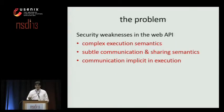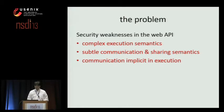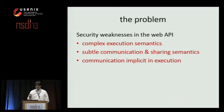I assert that these vulnerabilities aren't merely problems with the way web browsers implement the API, but rather problems with the API itself. The web API has very complex execution semantics and subtle communications and sharing semantics, and this communication often occurs implicitly. Because these are problems with the API, they can't be fixed simply by re-architecting the browser that implements it.